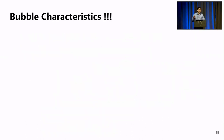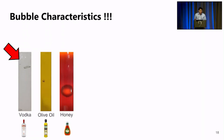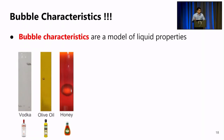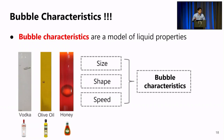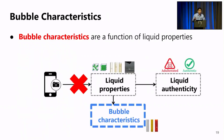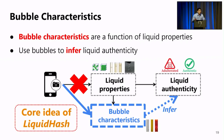It turns out that we can utilize the bubble characteristics. When I was playing with these different types of liquids, the moving bubbles really caught my eyes. As you can see in this example, in the vodka, olive oil, and honey, the bubbles move and look extremely differently. This is an amazing physical phenomenon that we can utilize. After some further studies, we realized that the bubble characteristics are a model of liquid properties. These characteristics include size, shape, and speed of the bubbles forming and moving inside the liquid. As the bubble characteristics are derived from the liquid properties, we can use the smartphone camera to capture them and then use them to infer the liquid authenticity. This is exactly the core idea of Liquid Hash.